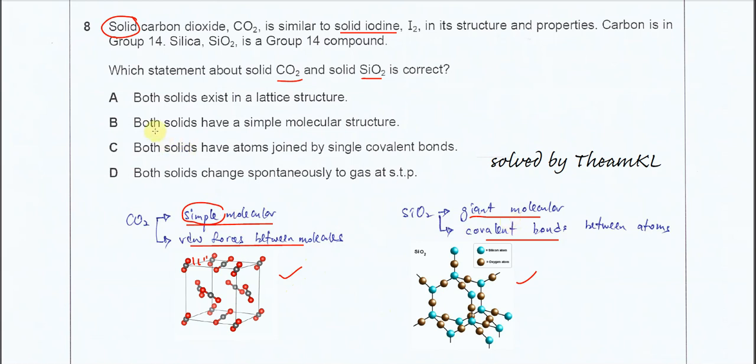Okay, B: both solids have a simple molecular structure. So this is wrong because it has simple for CO2 and SiO2 is giant.